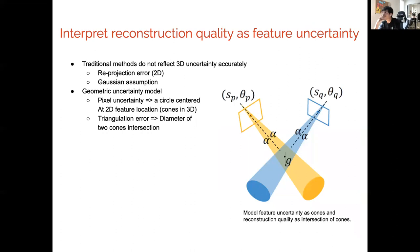We interpret reconstruction quality as feature uncertainty. Traditional methods do not really reflect the 3D uncertainty accurately. One method used root projection error, which is in 2D. Another 3D-like representation is a Gaussian assumption. However, it's not truly the 3D uncertainty that we're looking at.